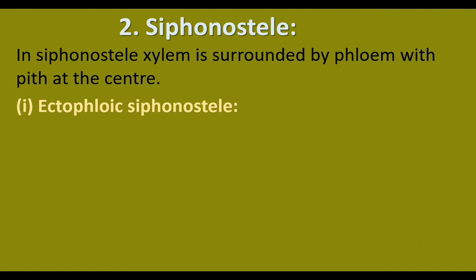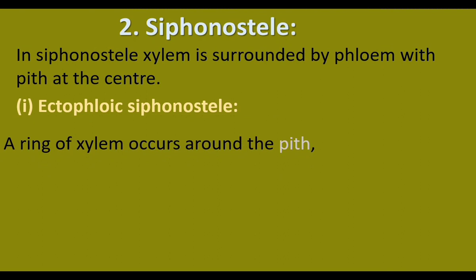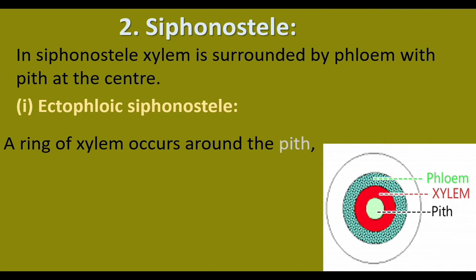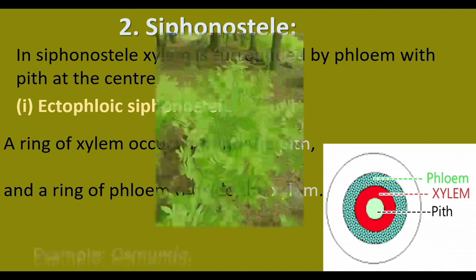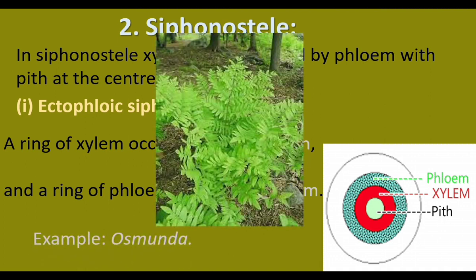Ectophloic siphonostele is the first type of siphonosteel. Ecto means outer — phloem forms the outer part. A ring of xylem is found around the pith. In this picture, xylem is shown in red color, and a ring of phloem is outside the xylem. Example: Osmunda.